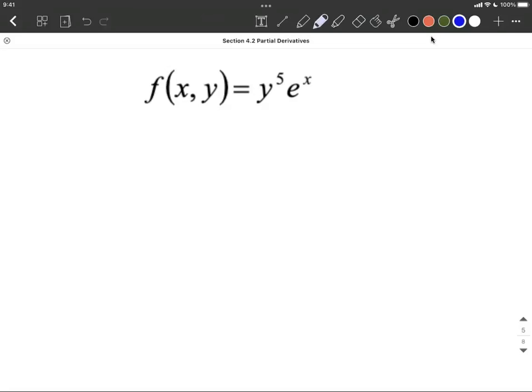Okay, taking a few partial derivatives here. Let's first find the partial derivative with respect to x. So remember, this is where we treat x as the only variable in this problem. So the y to the fifth, we're actually treating that as though it's a constant.